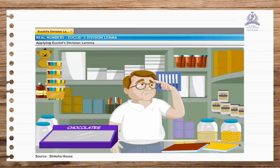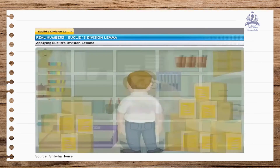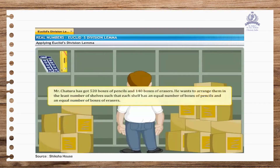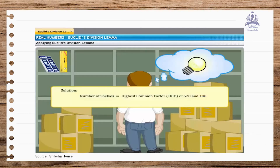Mr. Chathura has got a fresh stock of pencils and erasers. He is making space to arrange them on the shelves. Mr. Chathura has 520 boxes of pencils and 140 boxes of erasers. He wants to arrange them in the least number of shelves such that each shelf has an equal number of boxes of pencils and an equal number of boxes of erasers. All he has to do is find the highest common factor or HCF of 520 and 140. Mr. Chathura can use Euclid's division lemma to find the HCF.